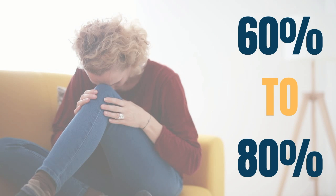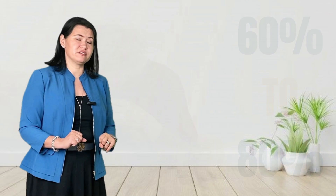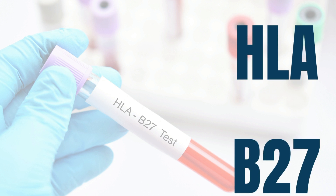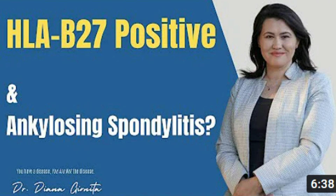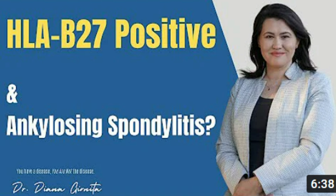60% to 80% of patients with reactive arthritis actually have a positive HLA-B27, which may increase their risk to develop this disease. If you want to know more about HLA-B27, what it is, and how it relates to different forms of inflammatory arthritis, watch the video in my channel.